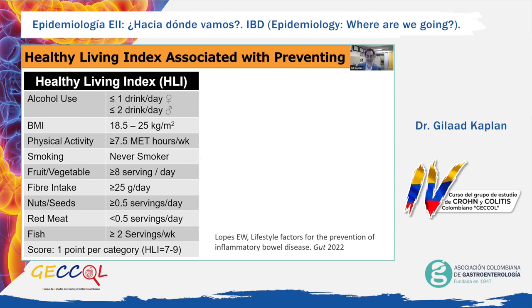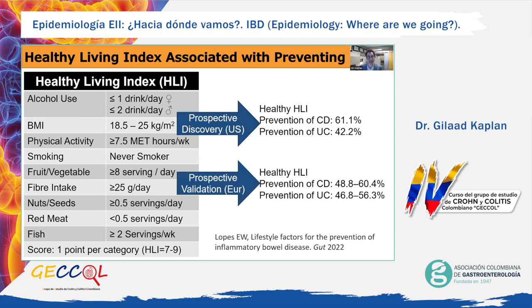The potential for lifestyle and dietary changes in preventing the onset of IBD has been shown in observational research. A cohort study of the Healthy Living Index — which includes nine domains such as minimal alcohol consumption, healthy BMI, physical activity, never smoking, eating greater than eight servings of fruits or vegetables per day, increasing fiber, increasing nuts and seeds, and reducing red meat while increasing fish per week — found that among those who followed seven or more of those nine domains, the incidence of Crohn's disease may be reduced by 50% to 61% and ulcerative colitis by 42% to 56%.